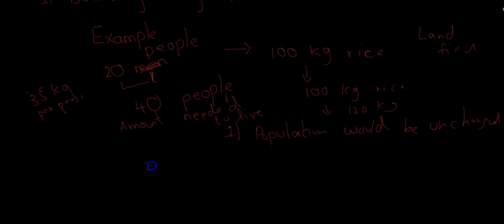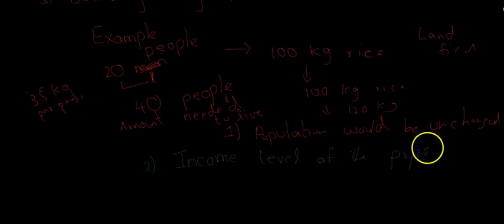Another thing Malthus said was that the income level—the GDP per capita income level of the population—would remain the same. In my example, you can see that the output remains the same. People are able to get the same amount, so the income level of the population remains the same no matter what happens.